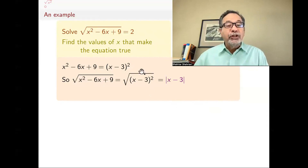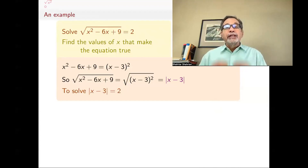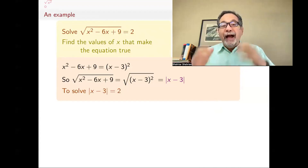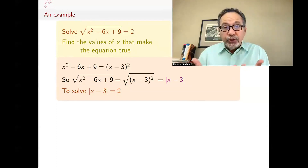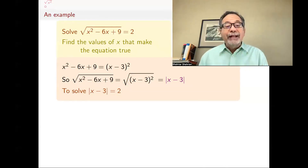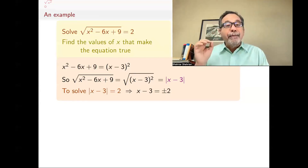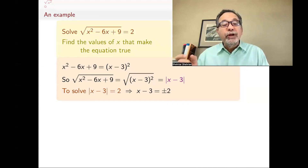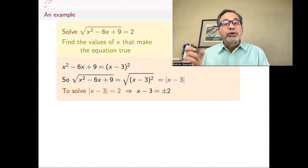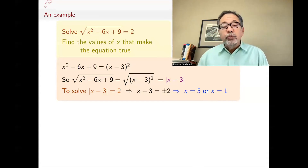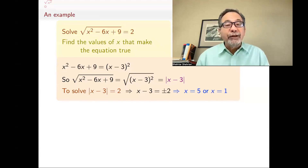So the original equation I want to solve becomes: absolute value of x minus 3 equals 2. When is absolute value of x minus 3 equal to 2? Well, absolute value of 2 is 2, and so is absolute value of minus 2. So x minus 3 could be either 2 or minus 2. If x minus 3 equals 2, then x equals 5. If x minus 3 equals minus 2, then x equals 1. Therefore I get two solutions: x equals 5 or x equals 1.